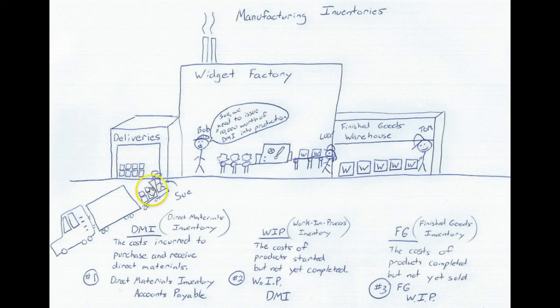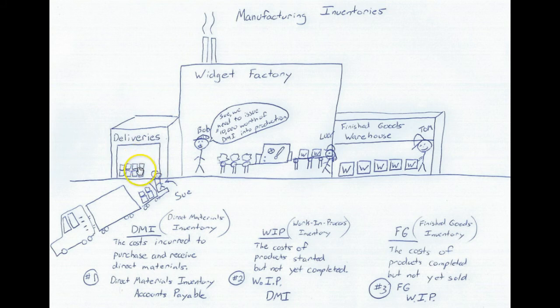Here's Sue — she's unloading the truck, putting it into the facility using her forklift. The materials are in there, it's in DMI. Now Bob is the supervisor on the factory floor, and he picks up the phone and calls Sue. He says: Sue, we need to issue $10,000 worth of DMI into production.